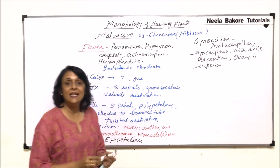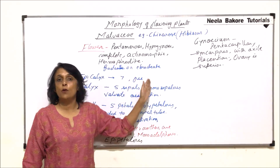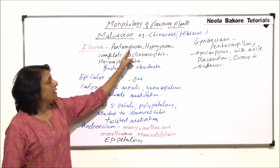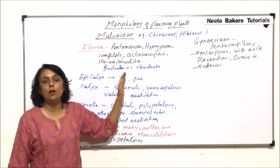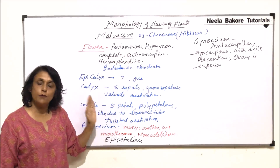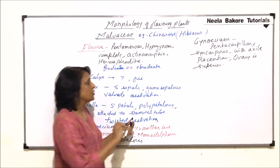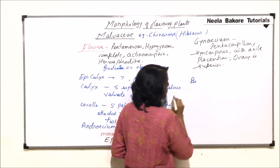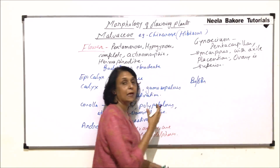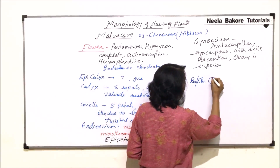With this information, can we write the floral formula and draw the diagram? We have understood the meaning of all these words and will now write the formula. The first thing in the formula is the bract — here they may have a bract, so we write it as Br or EBr, meaning it can be bracteate or ebracteate. After that comes symmetry — it is actinomorphic, so we use the actinomorphic symbol.